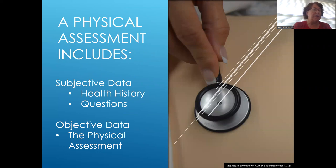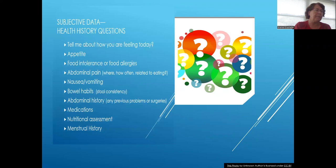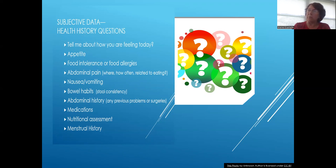Subjective and objective data are part of any physical assessment. You always start with the subjective data, which is your history, before you do the physical assessment. I like to ask open-ended questions first: Tell me how you're feeling today. Where is the pain? How long have you had the pain? When did it start? What makes it better? What makes it worse? When was your last bowel movement? You can ask the menstrual history, if applicable.